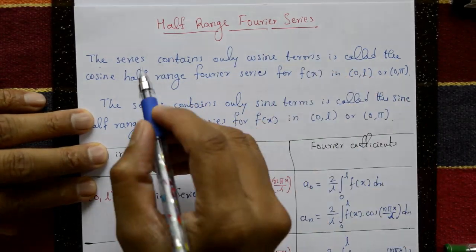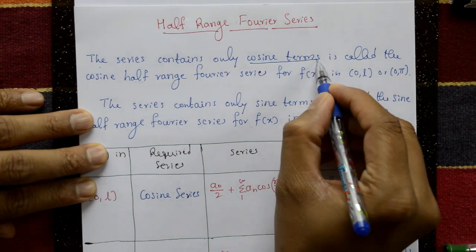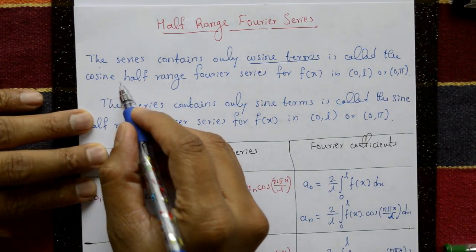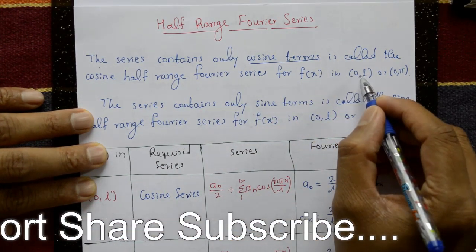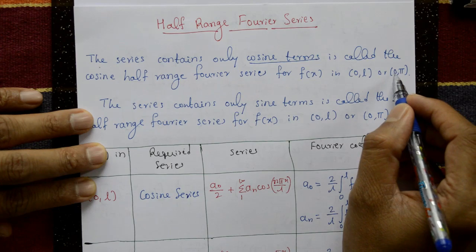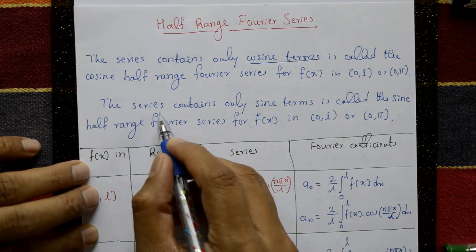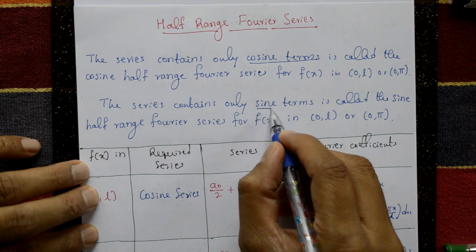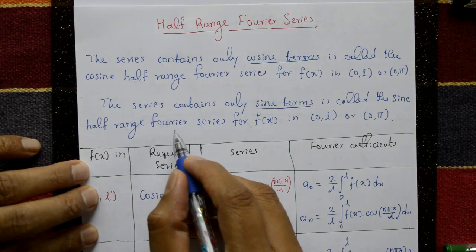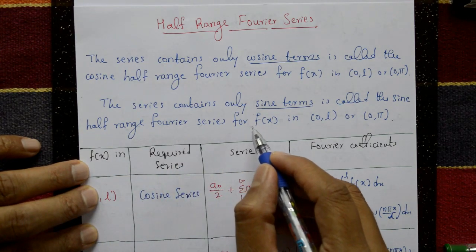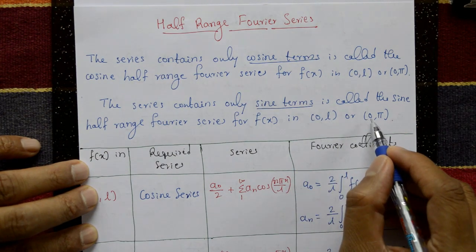Half-range Fourier series. The series that contains only cosine terms is called the cosine half-range Fourier series for f(x) in the interval 0 to l or 0 to π. The second type is the series that contains only sine terms, called the sine half-range Fourier series for f(x) in the interval 0 to l or 0 to π.